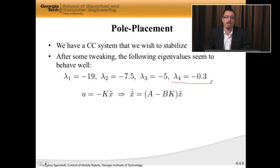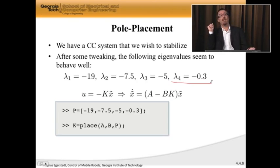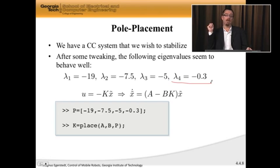With this, I'm going to pick u is negative K, not x, but x tilde, which is the new system I'm interested in. I get my closed loop dynamics like this. The way I compute K is to use the place command in MATLAB. So I type in my p, and K is place A, B, and p. So this stabilizes the Segway robot.